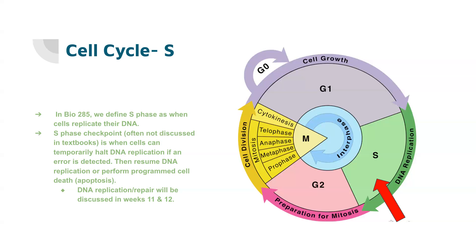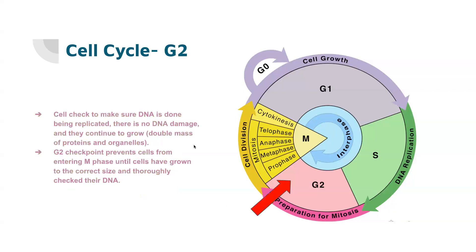DNA replication and repair will be discussed further in weeks 11 and 12. Then we have G2, which is another growth phase for the cell. The cell also checks that the DNA is done replicated and checks for DNA damage — it doesn't want to divide if there is damage. Cells also continue to grow in this phase. The G2 checkpoint is going to prevent the cells from going into M phase too soon, to prevent early division, and to make sure that they have the correct size and that their DNA is undamaged and ready to divide.